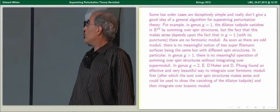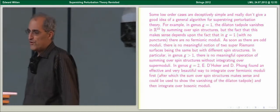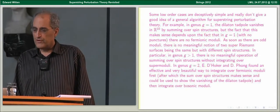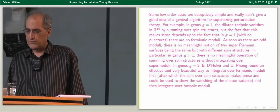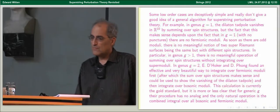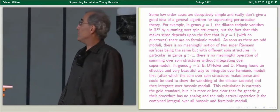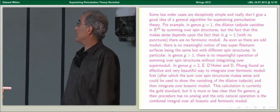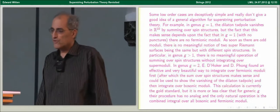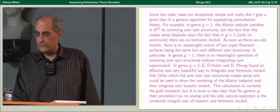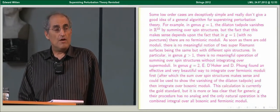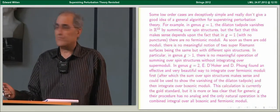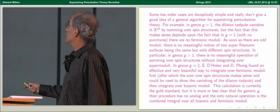In genus 2, D'Hoker and Phong found an effective and very beautiful way to integrate over fermionic moduli, after which they could sum over spin structures, and their calculation is currently the gold standard. But for generic genus G, their procedure has no analog, and the only operation is a combined integral over both bosonic and fermionic moduli. Ron Donagi and I are writing a paper with a precise theorem concerning one version of this statement.